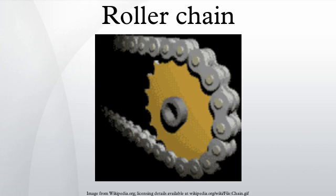Including conveyors, wire and tube drawing machines, printing presses, cars, motorcycles, and bicycles. It consists of a series of short cylindrical rollers held together by side links. It is driven by a toothed wheel called a sprocket.